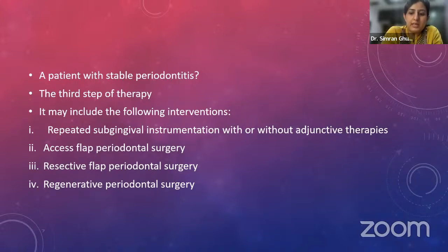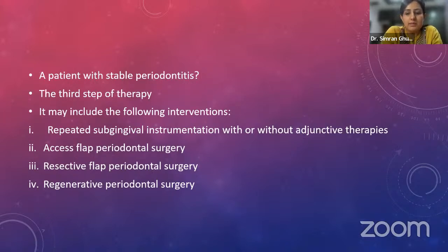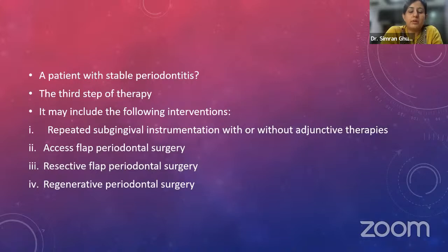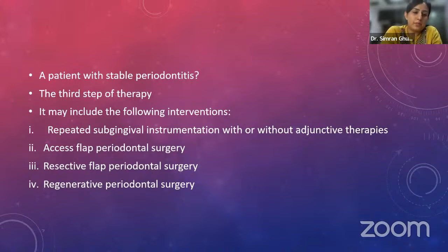The third step of therapy is aimed at treating areas of the dentition which do not respond adequately to the first or second step — meaning there are pockets greater than 4 mm with bleeding on probing on more than 10% of sites, or deep pockets greater than 6 mm. The purpose is to gain further access for subgingival instrumentation, or to address lesions that add complexity, such as intrabony pockets or furcation lesions, to either regenerate or resect them. The third step may include repeated surgical instrumentation, access flap surgery, resective flap surgery, or regenerative periodontal surgery.